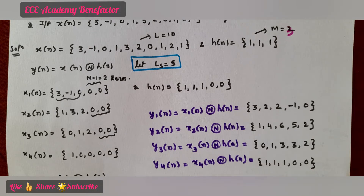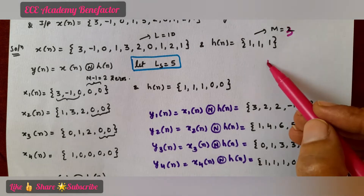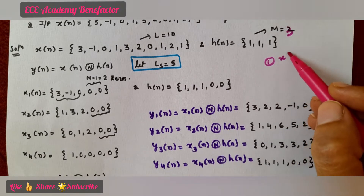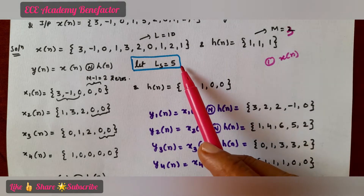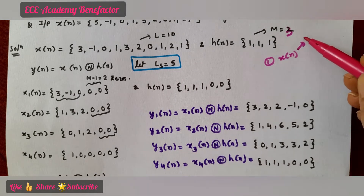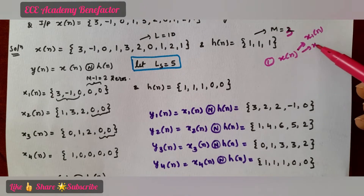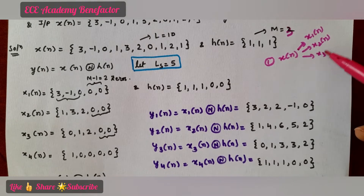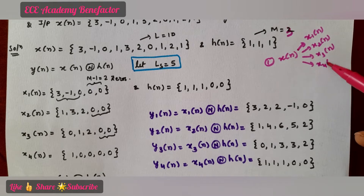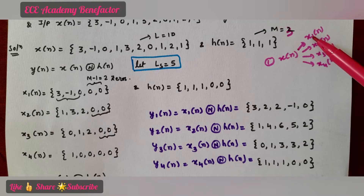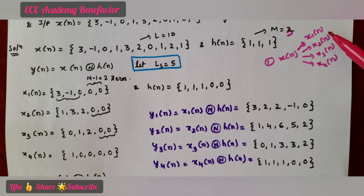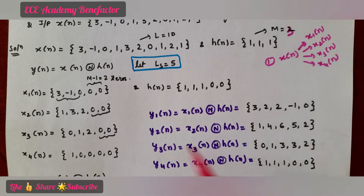The first step in the overlap add method is to break x(n) into small sections. Let us assume each section is of length 5. We will be dividing x(n) into x1(n), x2(n), x3(n), and x4(n), each of length 5, meaning each will contain 5 samples.